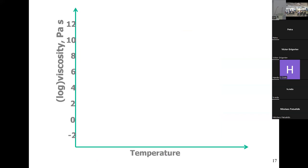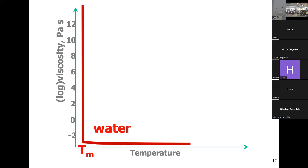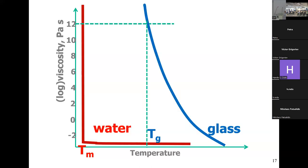A brief introduction to glass transition: in a simple liquid, cooling gives a first-order phase transition to a crystal. In more complex liquids, crystallization does not occur and instead a glass forms. The practical definition of glass transition temperature TG is when viscosity reaches 10^12 Pascal-seconds, with a characteristic relaxation time of roughly 100 seconds. This is a practical, not sharp, definition — the exact value is difficult to pin down.